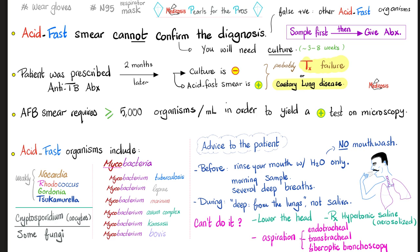If the patient still cannot produce a sample, we can use an instrument to take the sample: endotracheally, transtracheally through the skin, or via fiber optic bronchoscope.